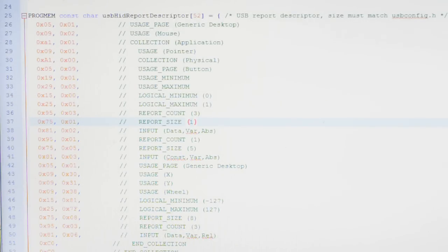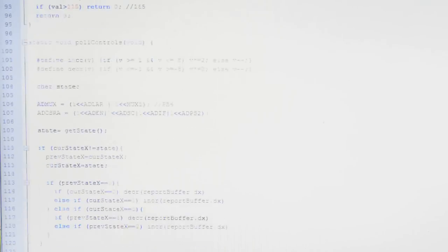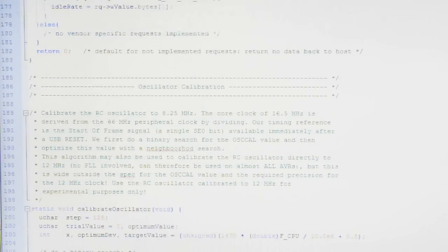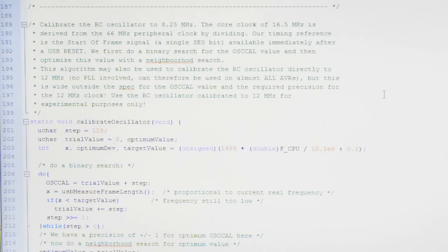Where they've included the report descriptor and hardware and vendor IDs from a Logitech mouse. So obviously we couldn't sell this, but who cares? As far as the computer is concerned, a mouse is a mouse. I've also included the calibration code from the EasyLogger example project, which uses USB measure frame length to tune the internal oscillator to 16.5 MHz.